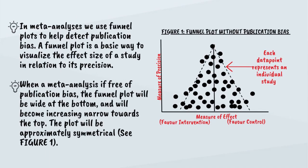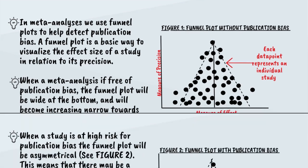In meta-analyses, we use funnel plots to help detect publication bias. A funnel plot is a basic way to visualize the effect size of a study in relation to its precision. When a meta-analysis is free of publication bias, the funnel plot will resemble a funnel — wide at the bottom and increasingly narrow towards the top — and the plot will be approximately symmetrical.